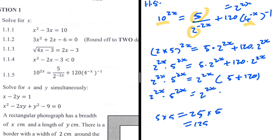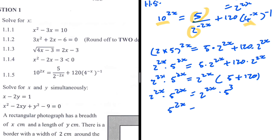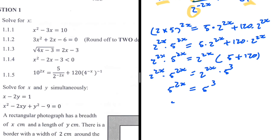Since 125 equals 5 cubed, the equation becomes 2 to the 2x times 5 to the 2x equals 2 to the 2x times 5 to the 3. We can divide both sides by 2 to the 2x, leaving 5 to the 2x equals 5 to the 3. With the same base on both sides, we equate the exponents: 2x equals 3, so x equals 3 over 2.